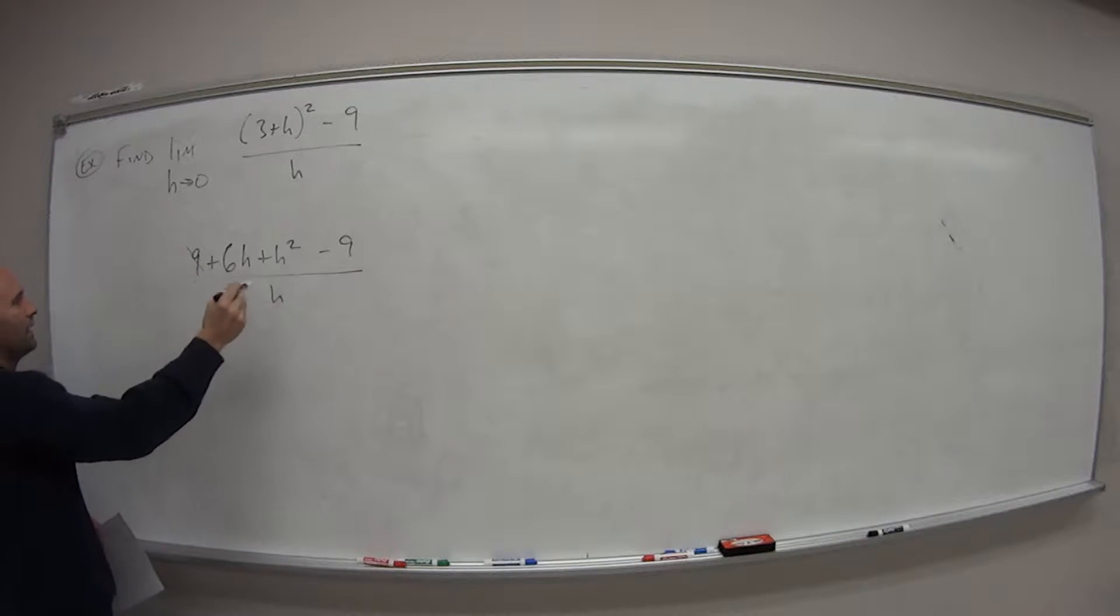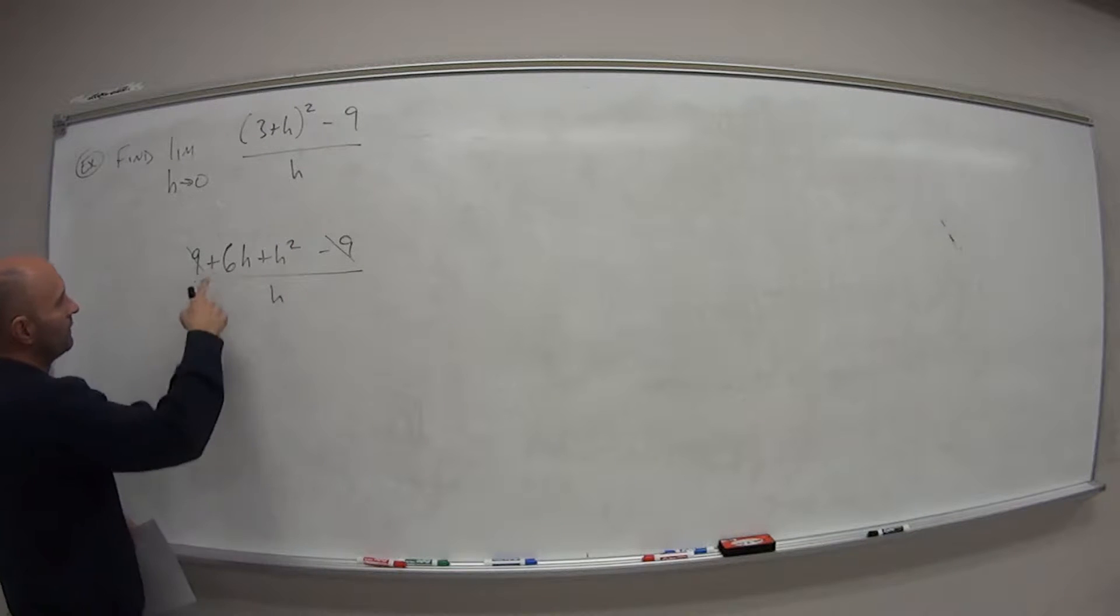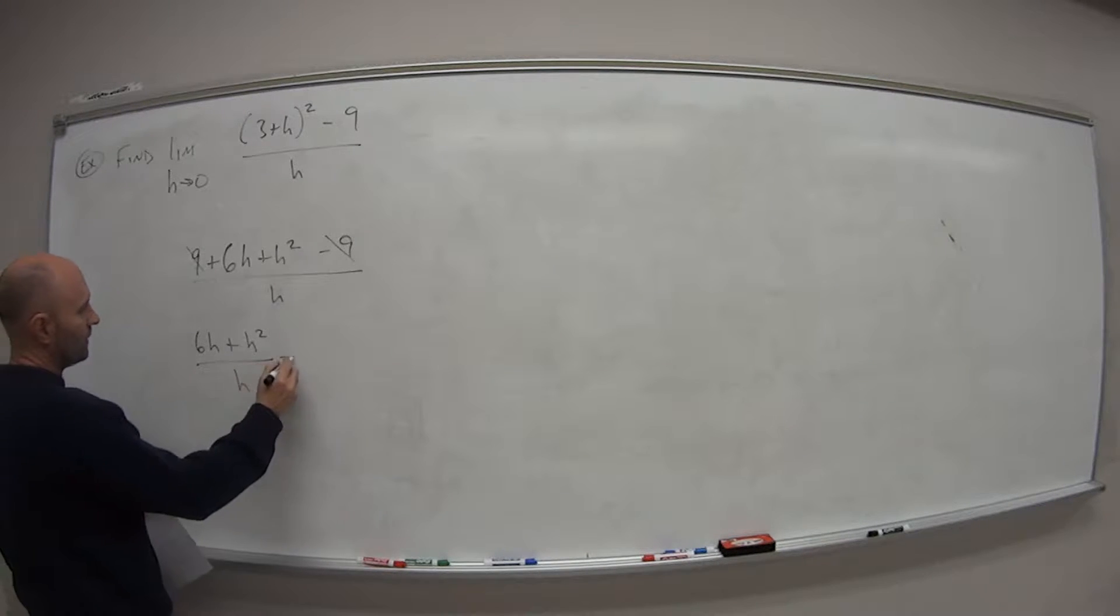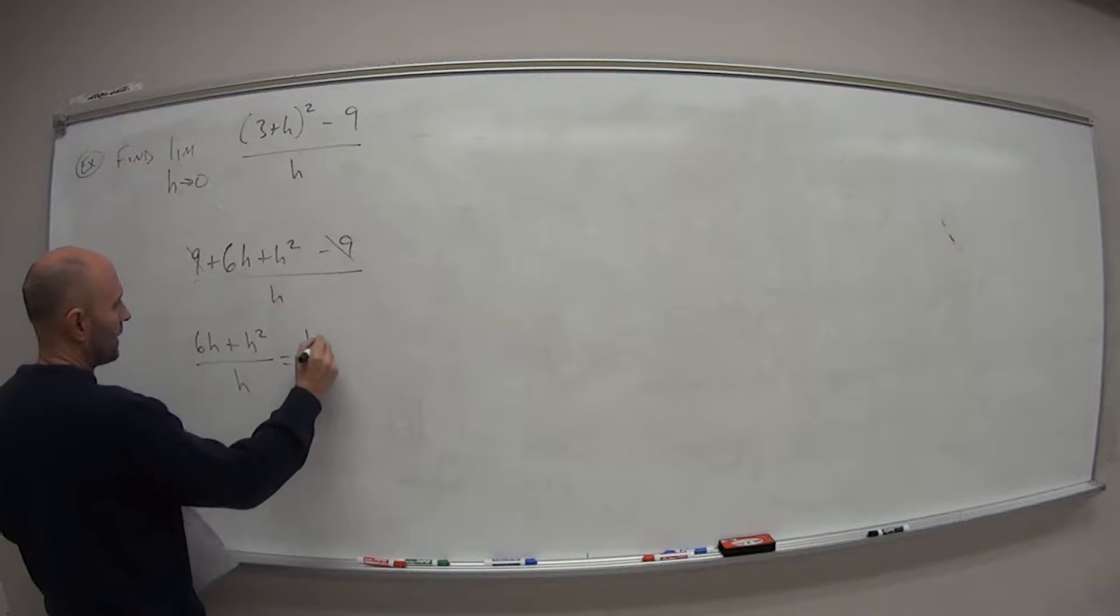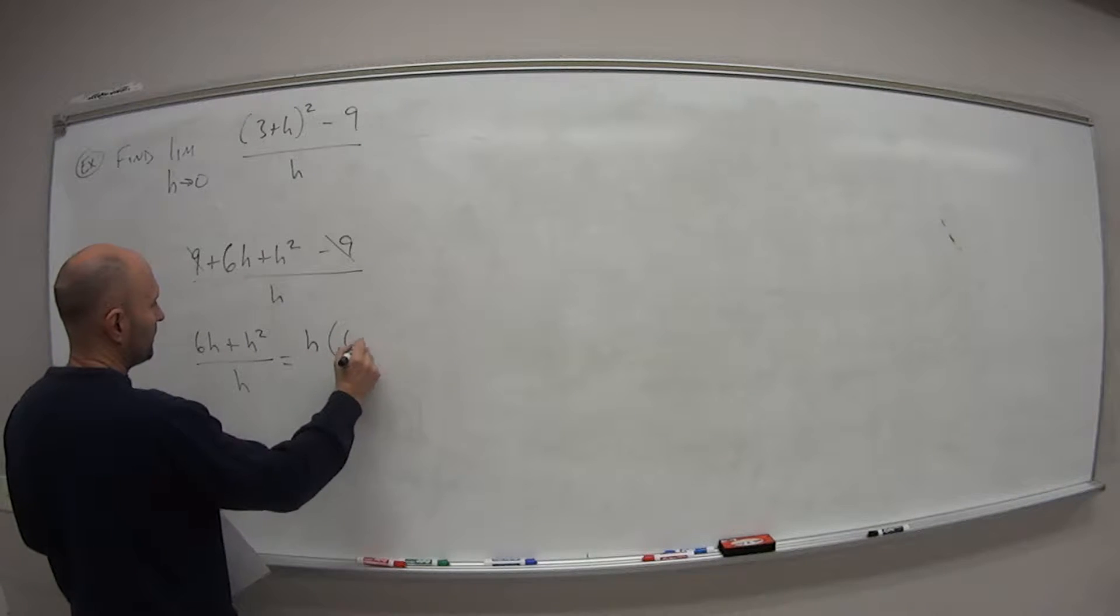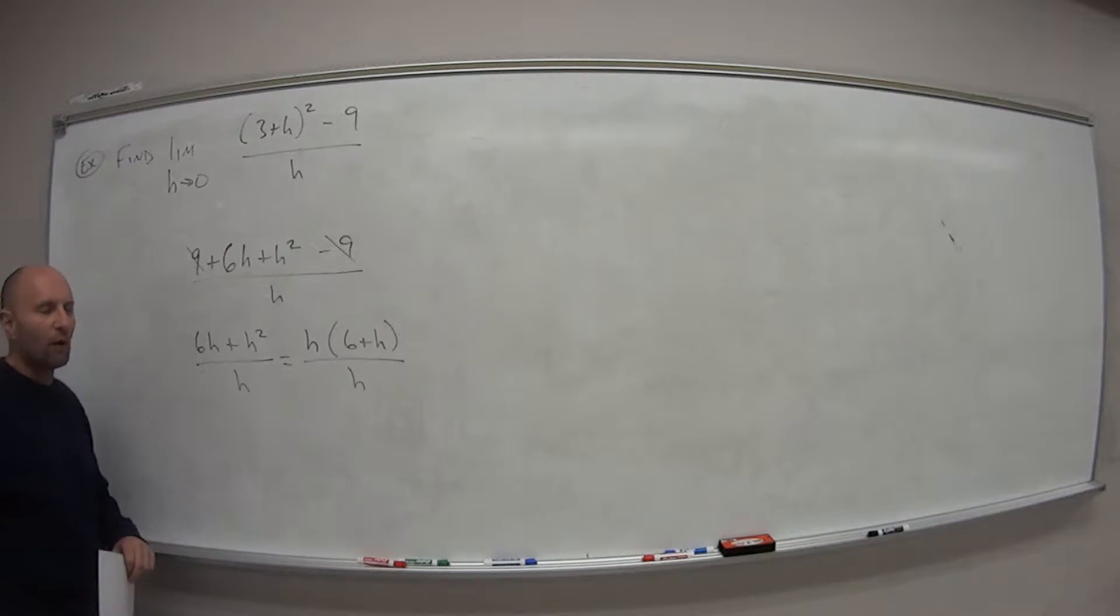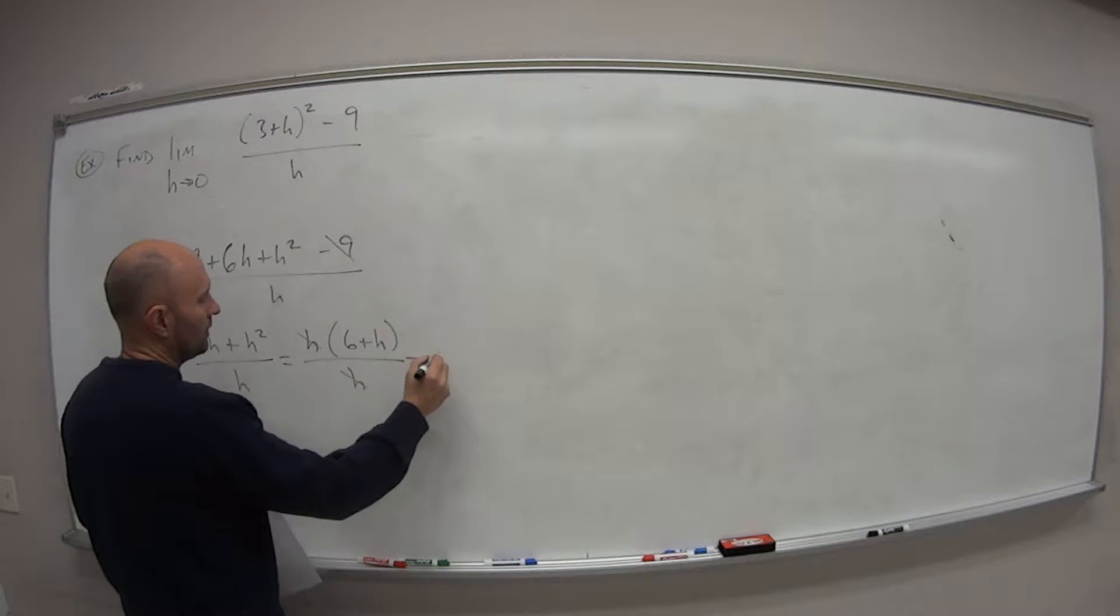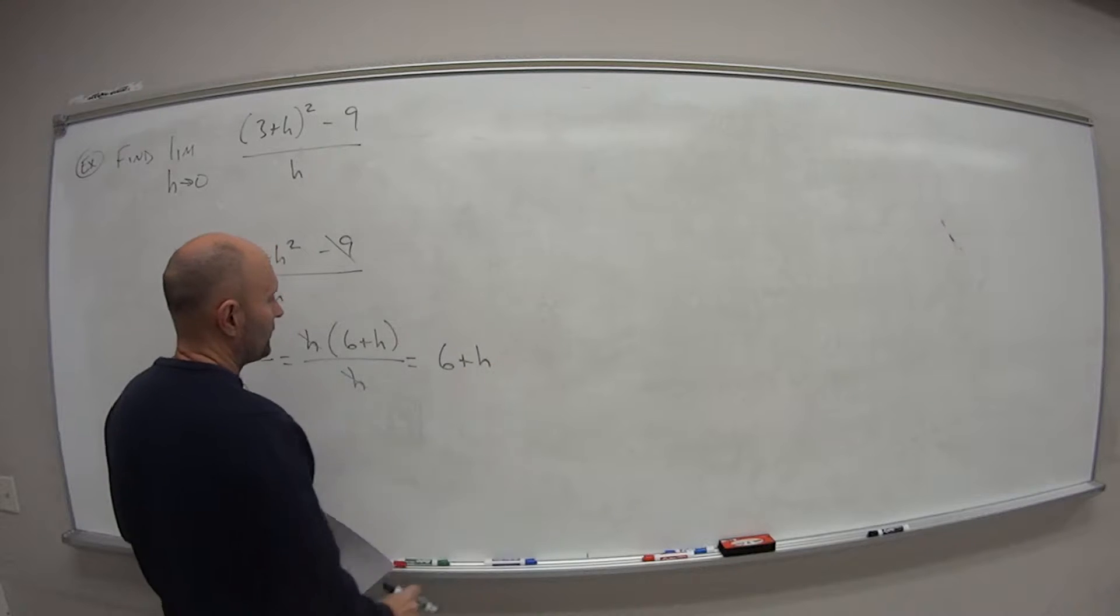So this 9 cancels with that one. So we end up with 6h plus h squared all over h. In the numerator, we can factor out an h, which gives us 6 plus h all over h. And lo and behold, that's what we want. This h cancels with that one. So this thing is really just 6 plus h.